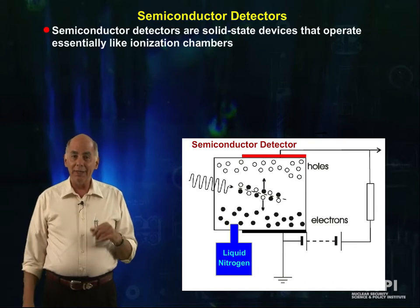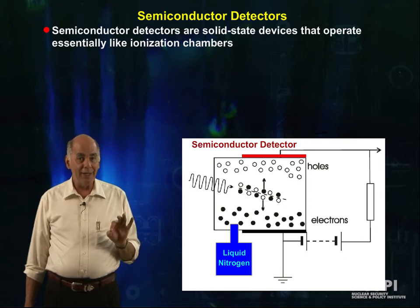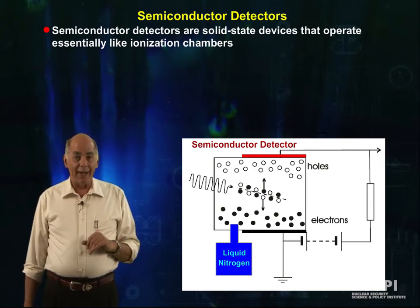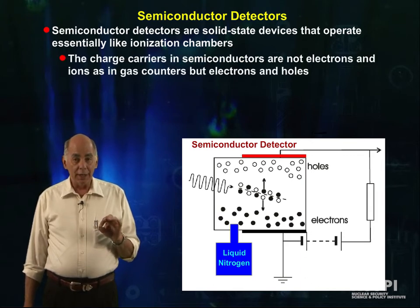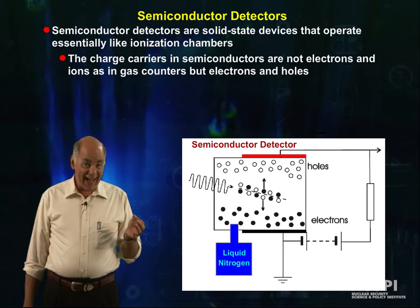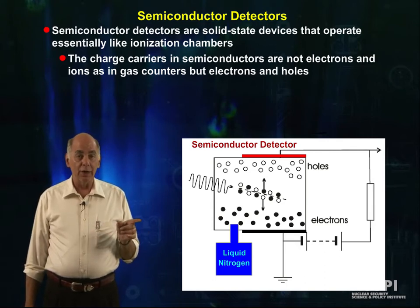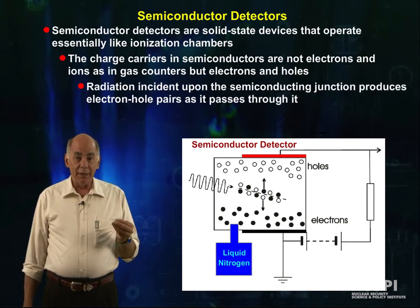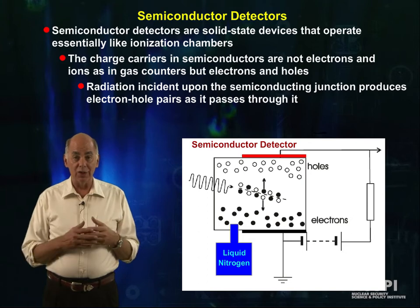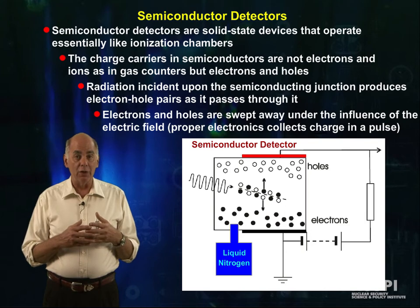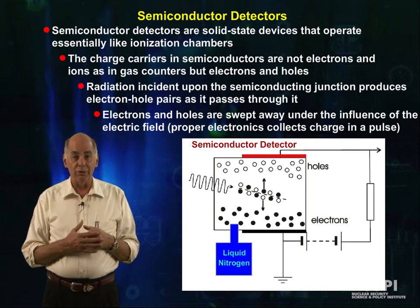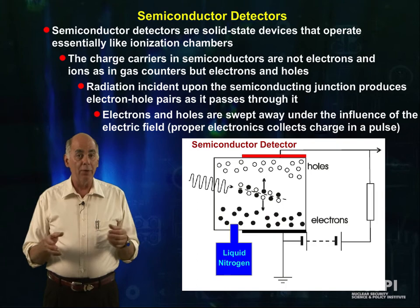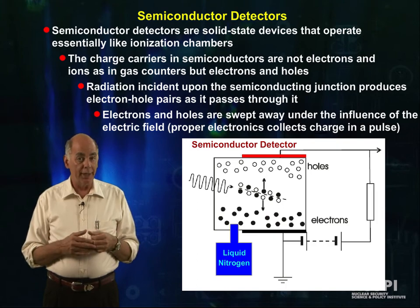Thus, semiconductor detectors are solid-state devices that operate essentially like ionization chambers. The charge carriers in semiconductors are not electrons and ions, as in gas counters, but electrons and holes. Radiation incident upon the semiconducting junction produces electron-hole pairs as it passes through, and these electrons and holes are swept away under the influence of an electric field, and proper electronics collect the charge and create a pulse.